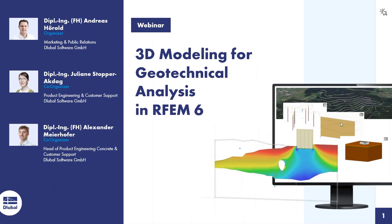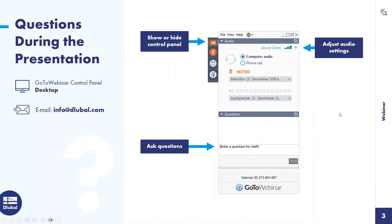For participants joining for the first time: on the right side of your screen you can see a control panel. You can show or hide it with the arrow, and you can enter a question there. Alexander and I will answer you. If you don't get an answer during the webinar because there are too many questions, you will get an email afterwards.